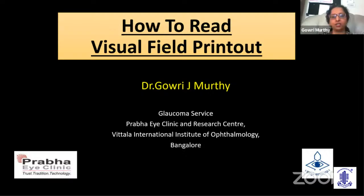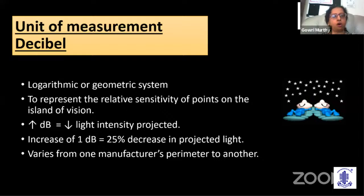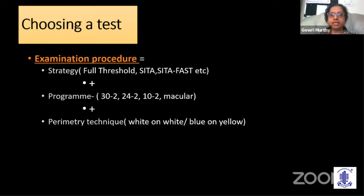What is being measured is the visual field — all the space that the eye can see at any given instant. We perform static perimetry which measures threshold. The unit of measurement is decibel, representing the relative sensitivity of points on the island of vision: more decibels means lesser light intensity projected and higher retinal sensitivity. When choosing a test, it is a combination of the strategy (full threshold, SITA, SITA fast), the program used (30-2, 24-2, 10-2, macular), and the technique (white on white or blue on yellow).